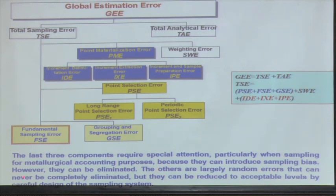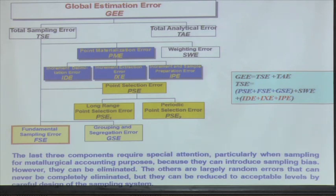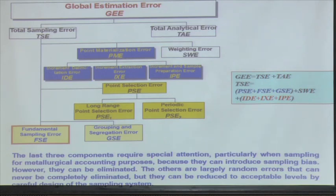No sampling scheme is entirely perfect — just like no prime minister is elected with 100% of votes in favour. No sampling campaign can guarantee accurate sampling; there is always some error. But errors can be reduced to acceptable levels by careful design of the sampling system.